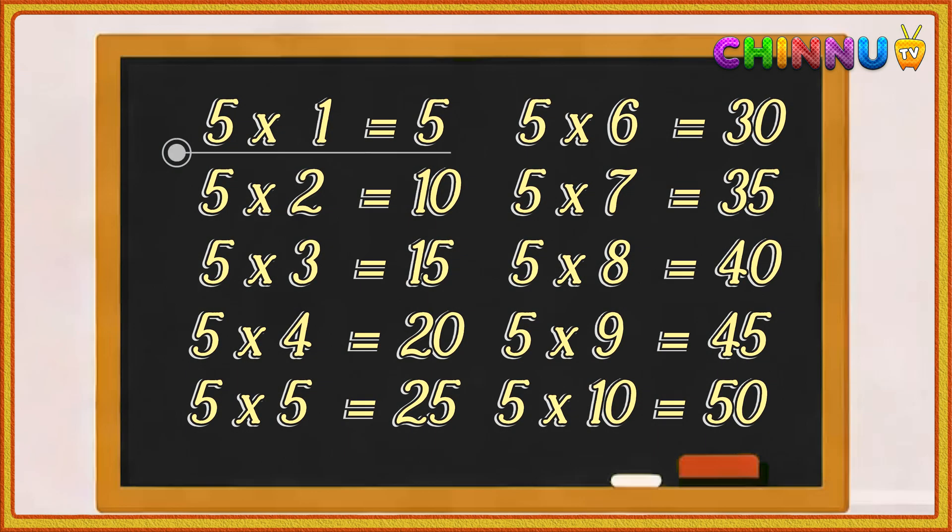Five ones are five, five twos are ten, five threes are fifteen, five fours are twenty, five fives are twenty-five.